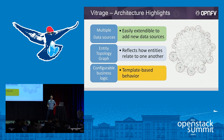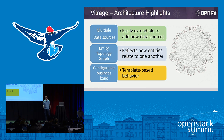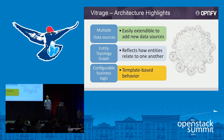The architecture highlights behind Vitrage: first, we have multiple data sources — we support a lot of data sources, and it's easy to extend and add more. We have an entity topology graph that reflects the relationship between different entities and different layers. And we have configurable business logic — different systems, different customers with different needs — so we want the system to be configurable to fit each configuration.